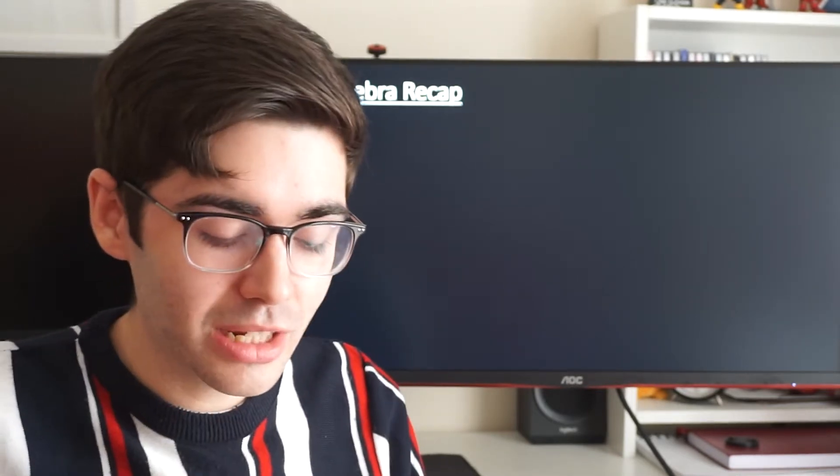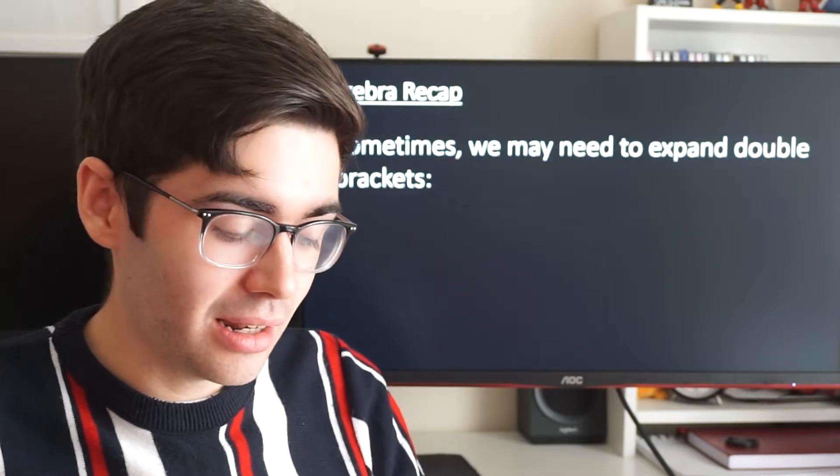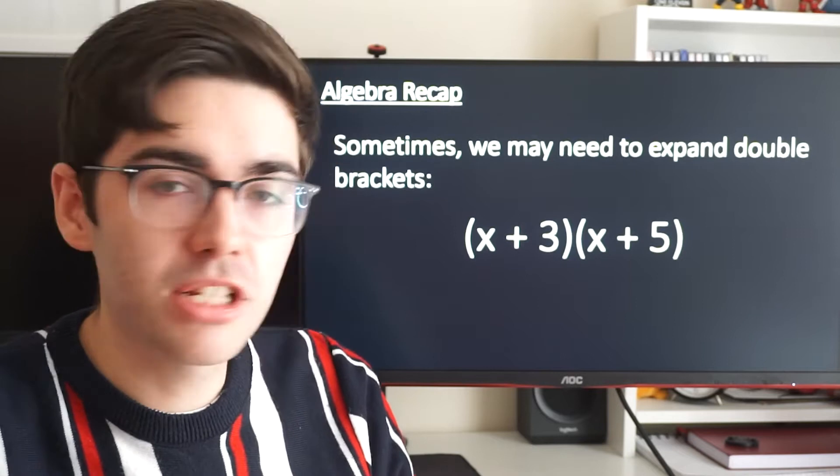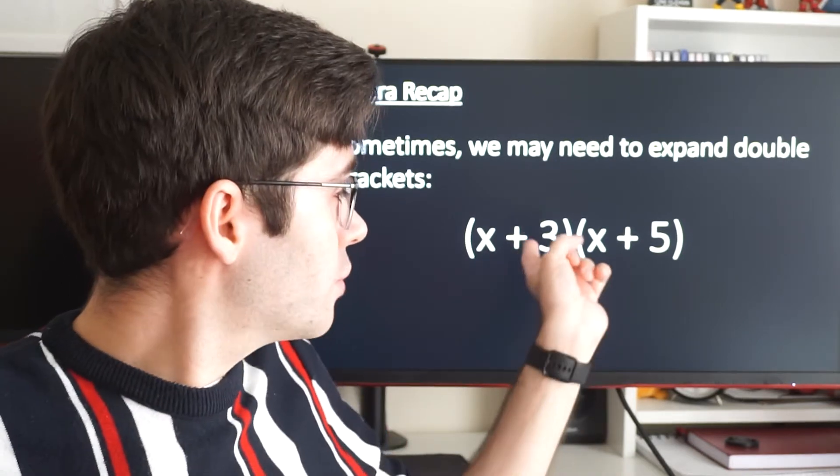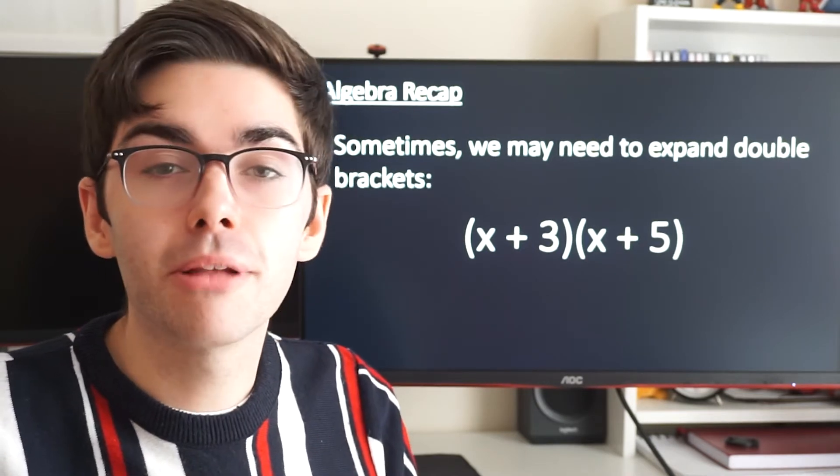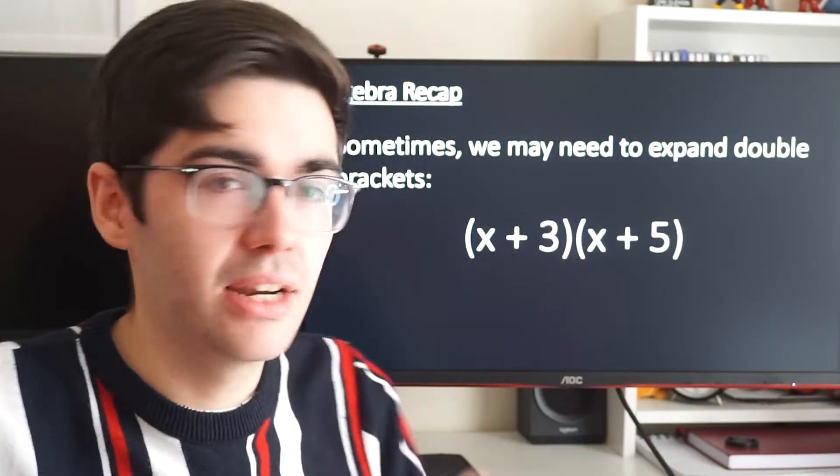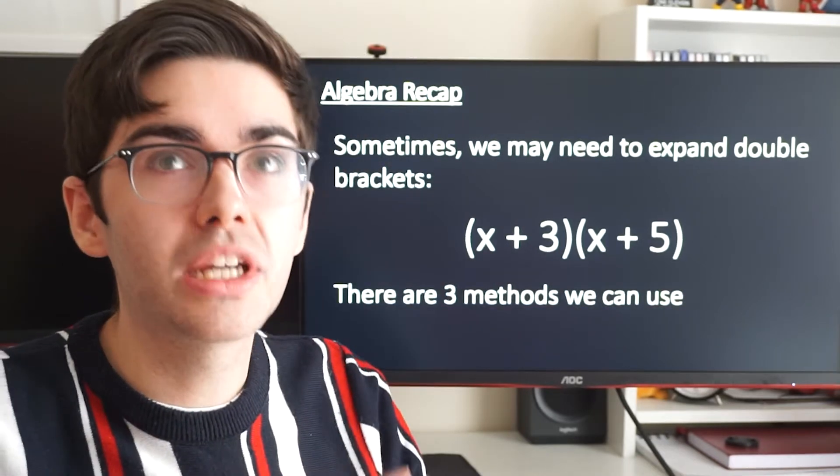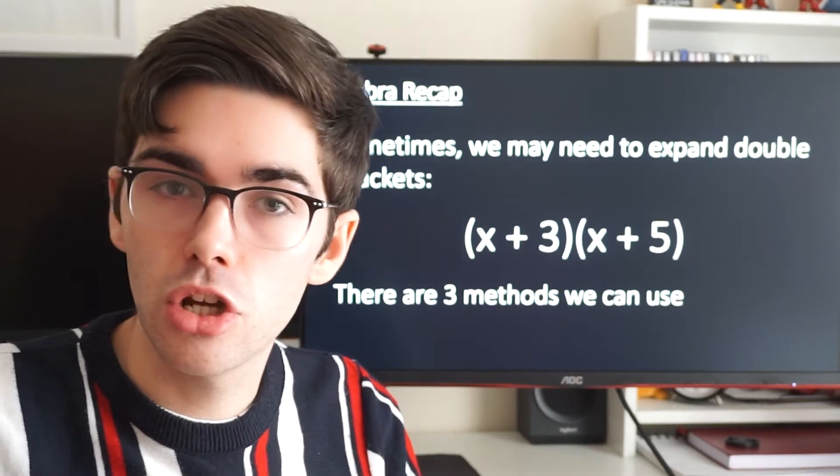Sometimes in maths, we need to expand double brackets that look like this: x plus 3 in a bracket, x plus 5 in a bracket. Now, if you've got two things in algebra with nothing between them, what does that mean? It means they're being multiplied together. There's an invisible times here in the middle. There are three methods we can use to expand double brackets, and I'm going to show them to you now.